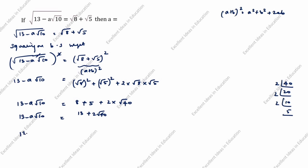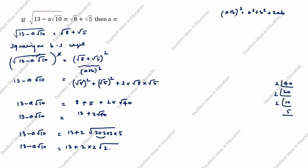Next, 13 minus a root 10 equals 13 plus 2 root of 2 × 2 × 2 × 5. Simplifying: 2 squared is 4, and root of 4 × 10 gives 2 root 10. So 13 minus a root 10 equals 13 plus 4 root 10.